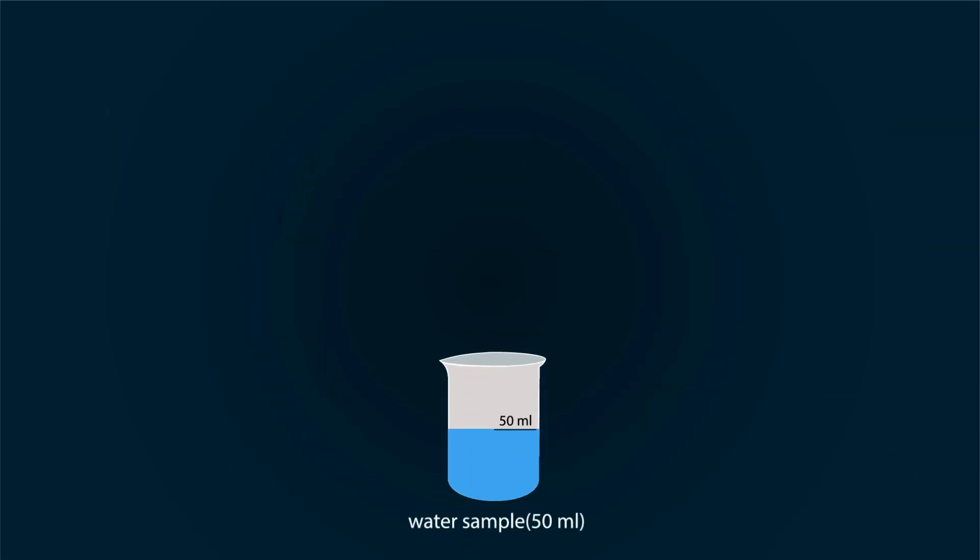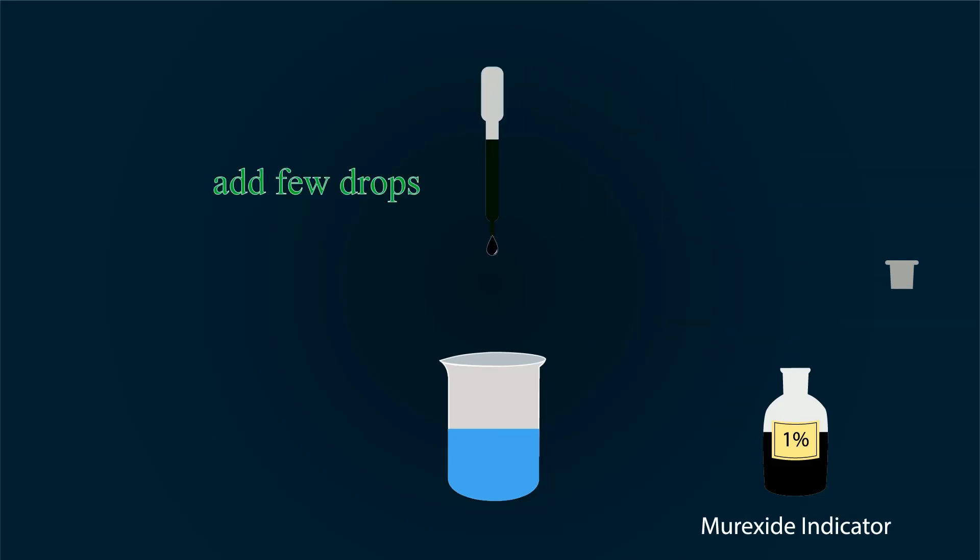First of all, take a 50 milliliter water sample in a beaker. Now take 1% solution of Murexide indicator, and add a few drops into the water sample with the help of a dropper. You will see as you add the solution, the color of water will change into orange.